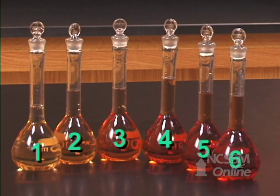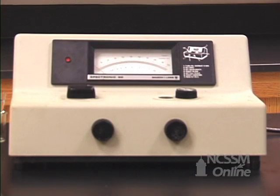We have prepared a series of solutions of known concentrations of the complex ion. We will use a spectrophotometer to read the absorbance of those solutions. We will make a Beer's Law plot of absorbance versus concentration to make a calibration line.